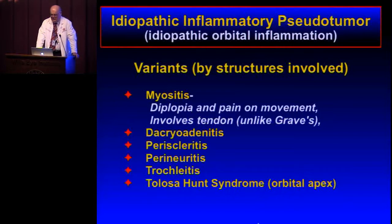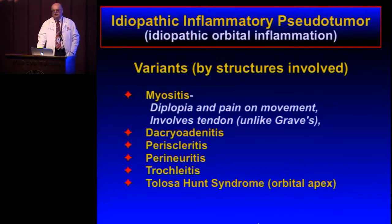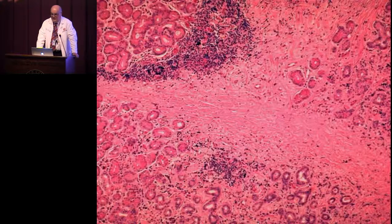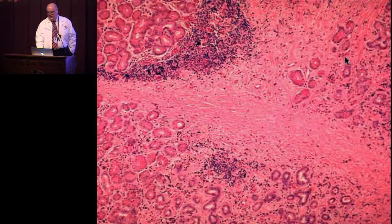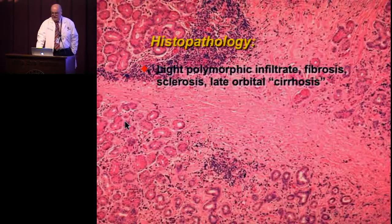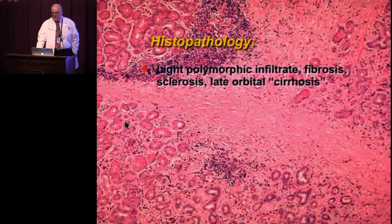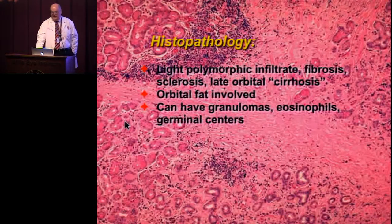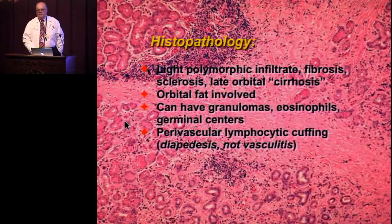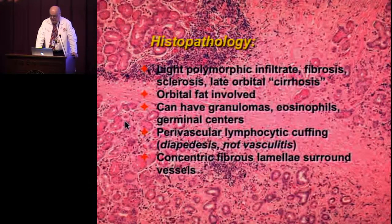There are different variants of orbital inflammatory pseudotumor depending on the structures involved: orbital myositis and dacryoadenitis. Classically, in the lacrimal gland we see an atrophic lacrimal gland with lots of fibrosis and foci of chronic inflammation — a light polymorphic infiltrate with fibrosis/sclerosis. The orbital fat is involved. You can have granulomas, eosinophils, and germinal centers. There is no true vasculitis, but you may have perivascular cuffing by lymphocytes and concentric fibrous lamellae surrounding the vessels.